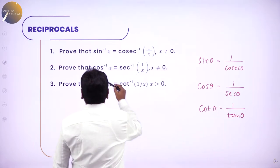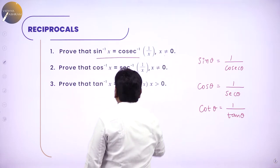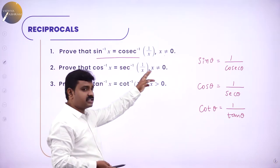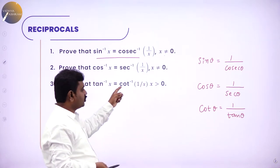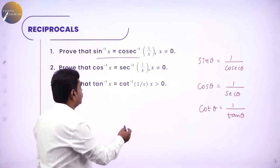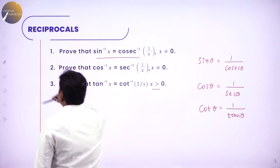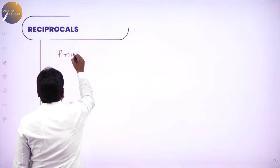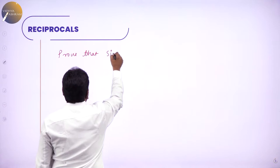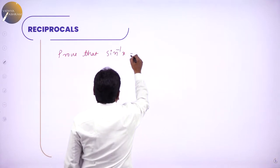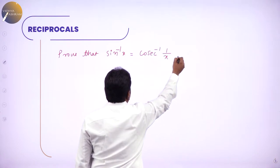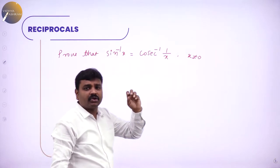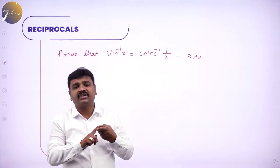Now we need to prove: sin inverse x equals cosecant inverse (1/x), where x ≠ 0. We also need to prove cos inverse x equals secant inverse (1/x) where x ≠ 0, and tan inverse x equals cot inverse (1/x) where x > 0. Let us start with the first one. Proof is simple — you should know reciprocals. What is the reciprocal of sin theta? Cosecant theta.